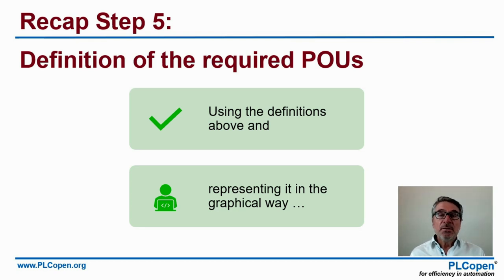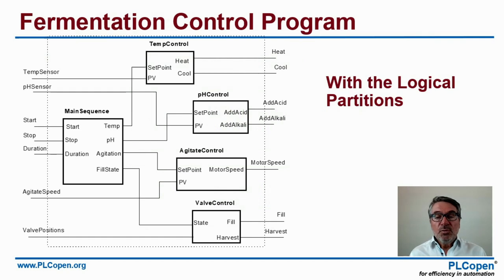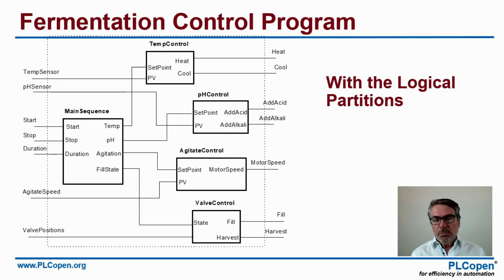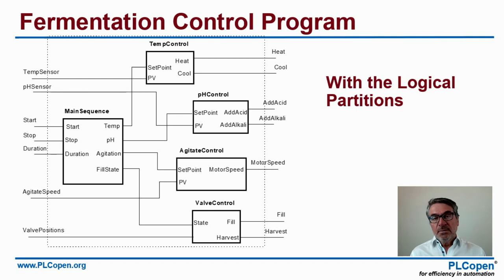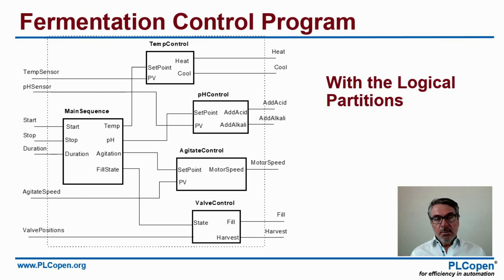Going back to step five: using the definitions above and representing them graphically, we arrive at this view. You see the logical partitions — main sequence, temperature control, pH control, agitate control, valve control — these are the POUs. They are supported by inputs on the left, including the operator start, stop, and duration inputs, and by outputs on the right. This is essentially the fermentation control program at a higher level.